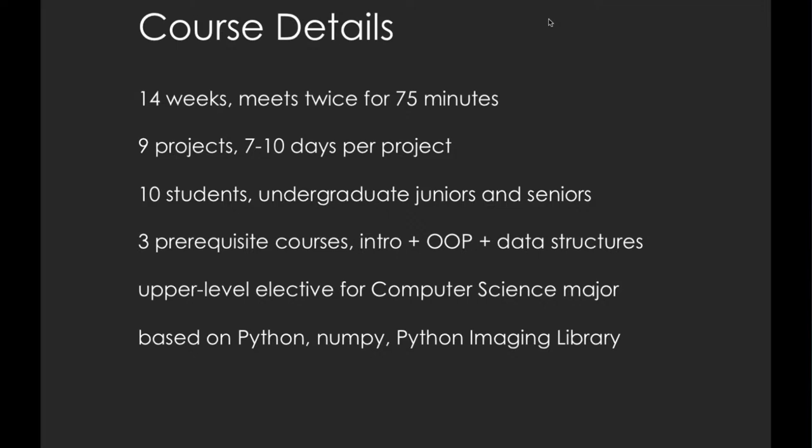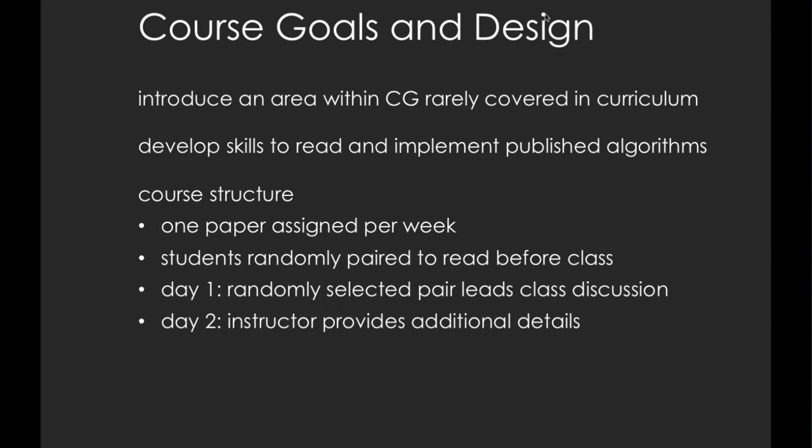Our course ran as a typical semester-long course with two 75-minute meetings per week. Ten undergraduate junior and senior computer science students were enrolled, completing nine projects during the semester, each taking about a week to a week and a half. This was an upper-level elective whose prerequisites are the equivalent of CS1 and CS2. The course used Python and two libraries for numeric computation and image manipulation. The goal was to introduce students to an area rarely covered as a single unit, and to expose them to published research, developing their skills of reading and implementing published algorithms.